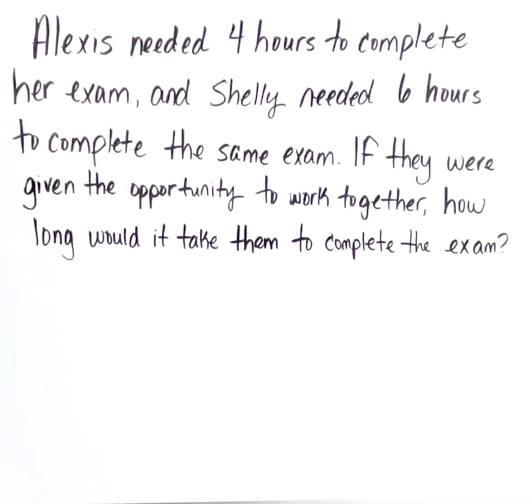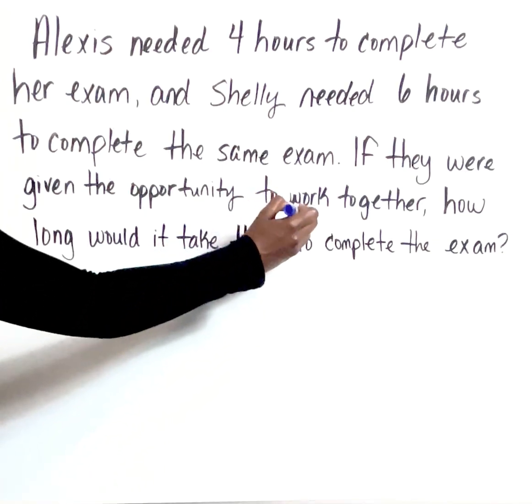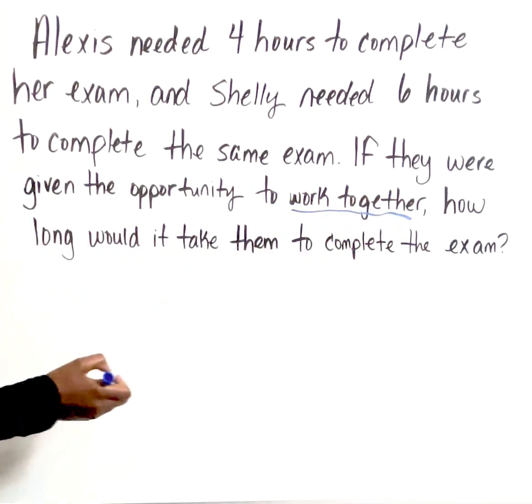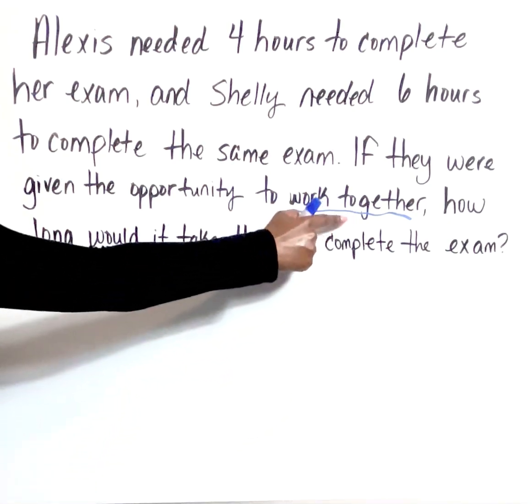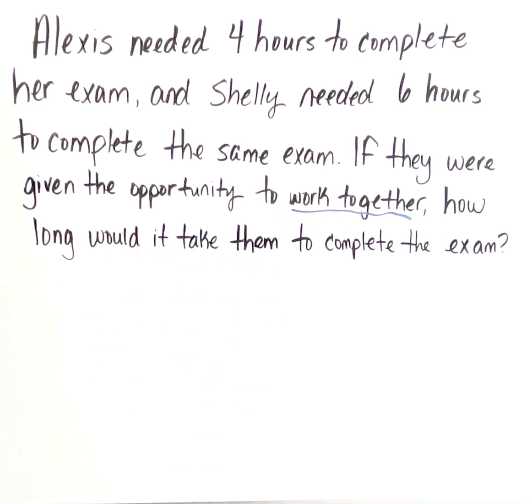Remember, anytime we're dealing with work problems, we want to identify triggers. How do I know I'm dealing with a rate of work question? Anytime people work together, that's rate of work - one person takes a certain amount of time, another takes a different amount of time. The question is: if they did it together, how long would it take them?